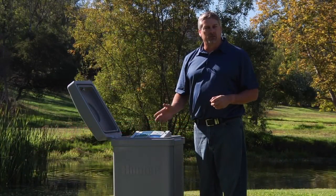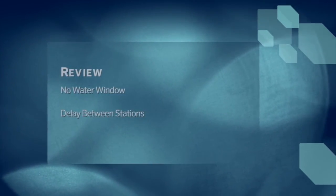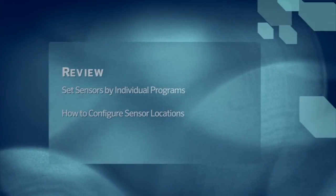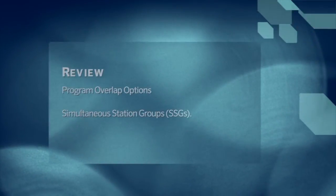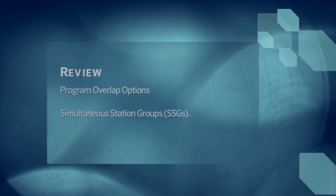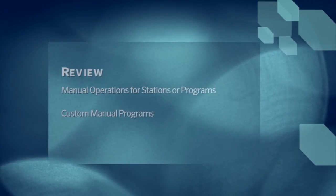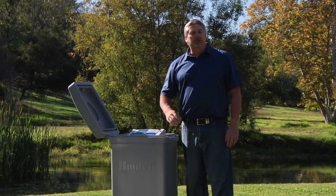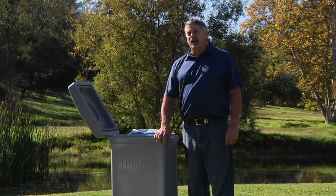This completes the features of the ACC controller covered in this video. We discussed the use of a no water window and delay between stations, the pump and master valve function, and the cycle and soak function. We showed you how to set sensors by individual programs and configure their locations, explained the different program overlap options, and showed you how to form simultaneous station groups or SSGs. We also explained the different ways to run stations or programs manually, including the use of custom manual programs. For more detailed information on how to program these ACC functions, refer to the owner's manual at HunterIndustries.com.